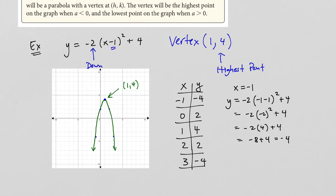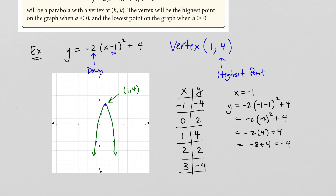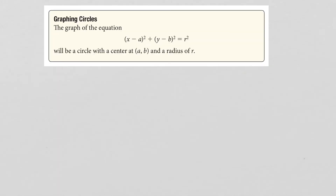That's a brief refresher on how to graph parabolas, which will come in handy for other graphs later in the course. Next, let's take a look at graphing circles. The general equation for a circle is x minus a squared plus y minus b squared equals r squared, where (a, b) is the center of the circle and r is the radius.